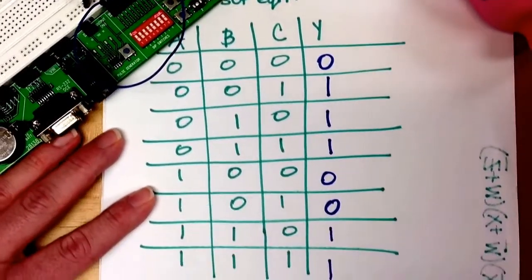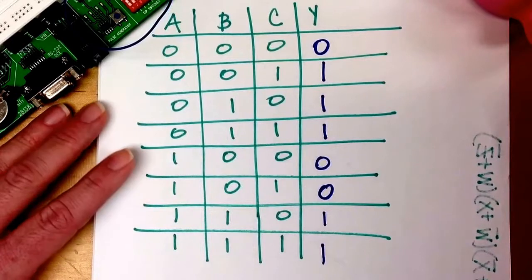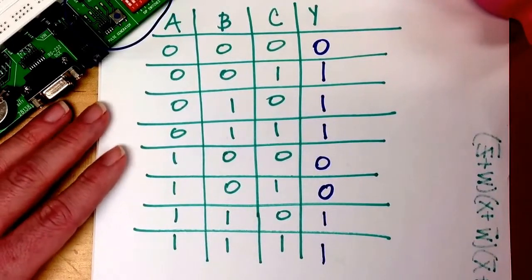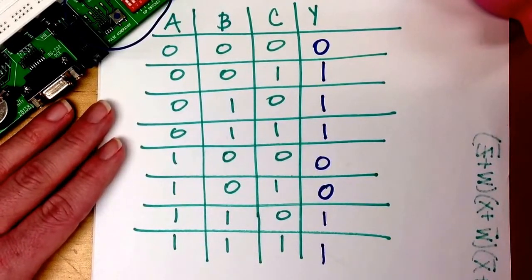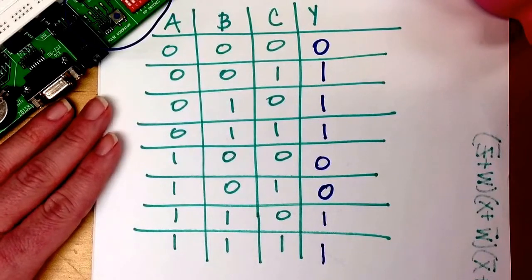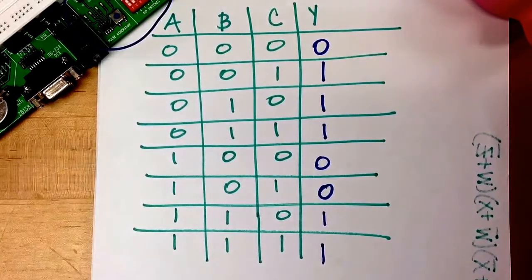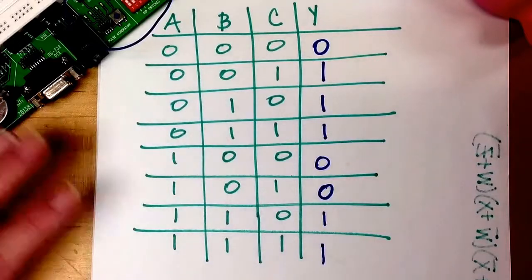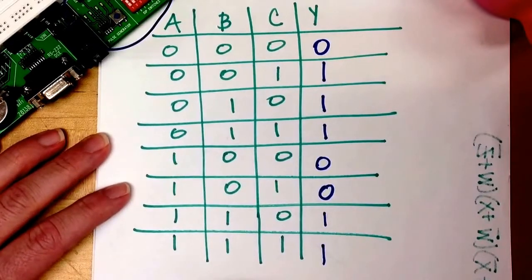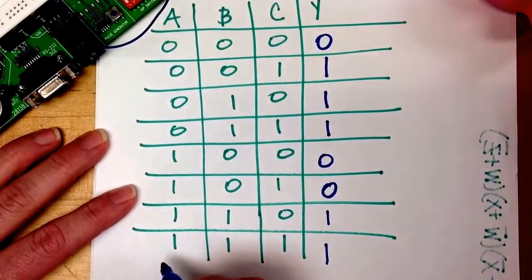So this now is my truth table. We started with the product of sums equation, but now we have this truth table. So if I want to write the sum of products equation, I can. Let's think what that will look like.